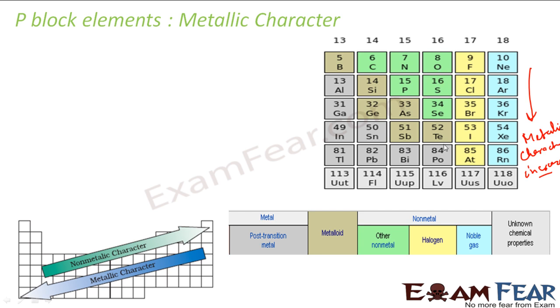Here are the non-metals, metalloids, metals. Non-metal, metalloids, metal. All halogens, and these are all noble gases. You can ignore this part. But if you see the groups 13, 14, 15, 16, it is metalloids then metals. Non-metal, metalloids, metal. So the metallic character is increasing as we go down the group.